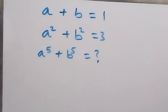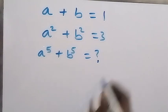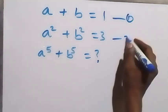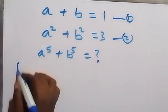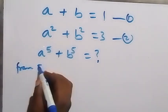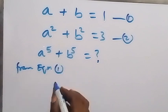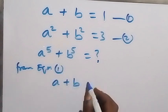Hello, you are welcome. We are going to solve this algebra system of equations and find the value of a raised to power 5 plus b raised to power 5. Let's label this as equation 1 and this as equation 2. From equation 1, we have a plus b equals to 1.